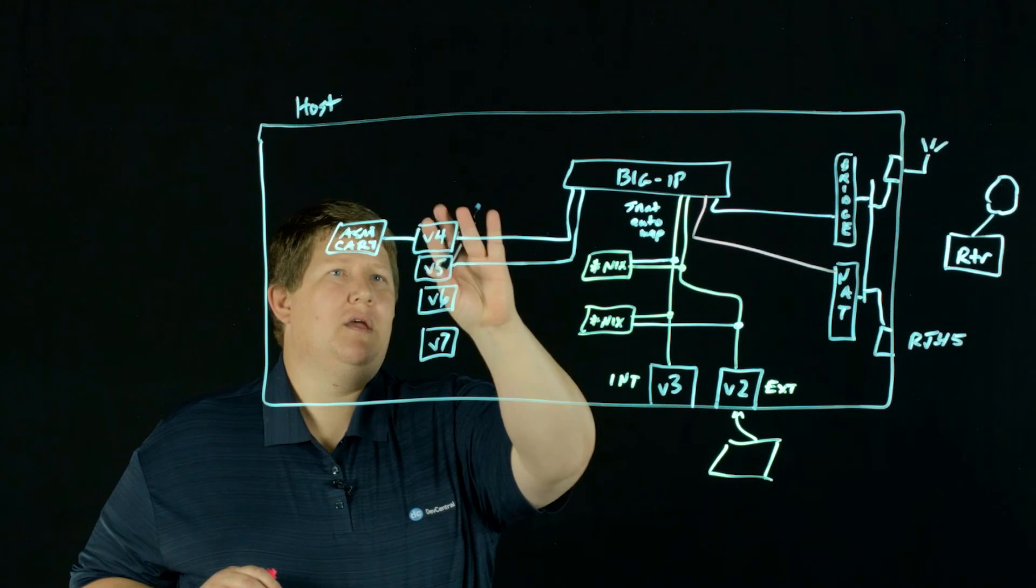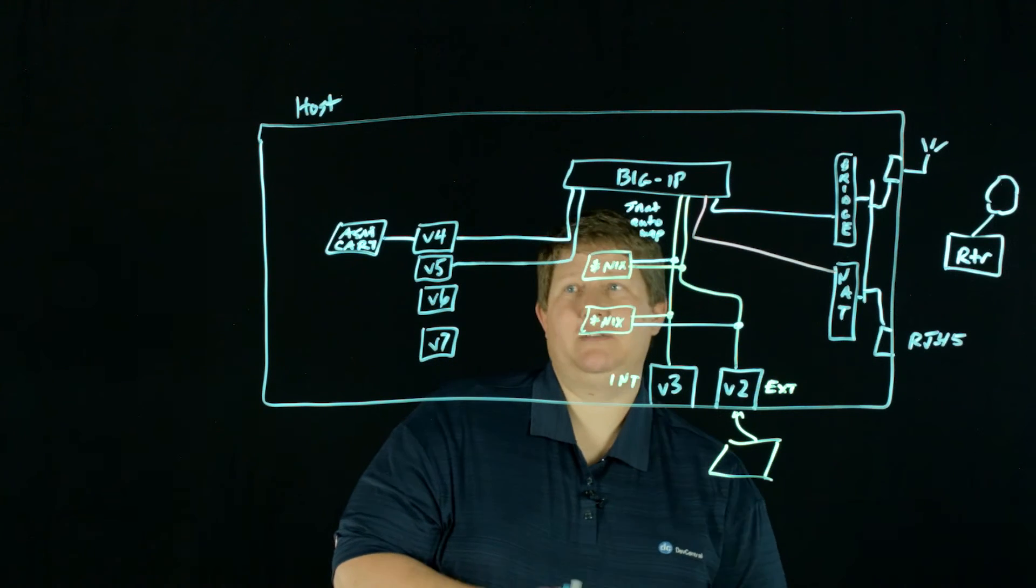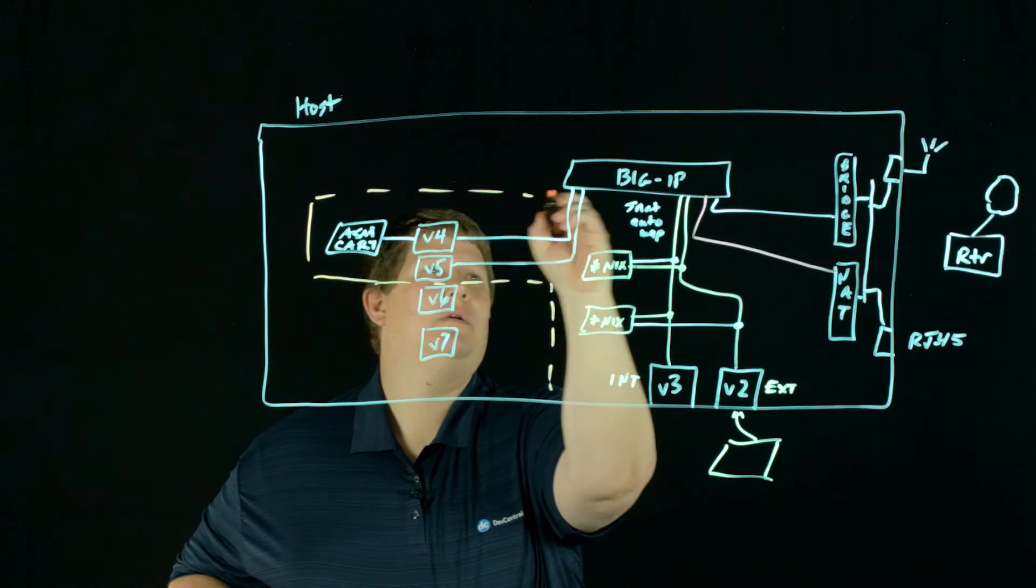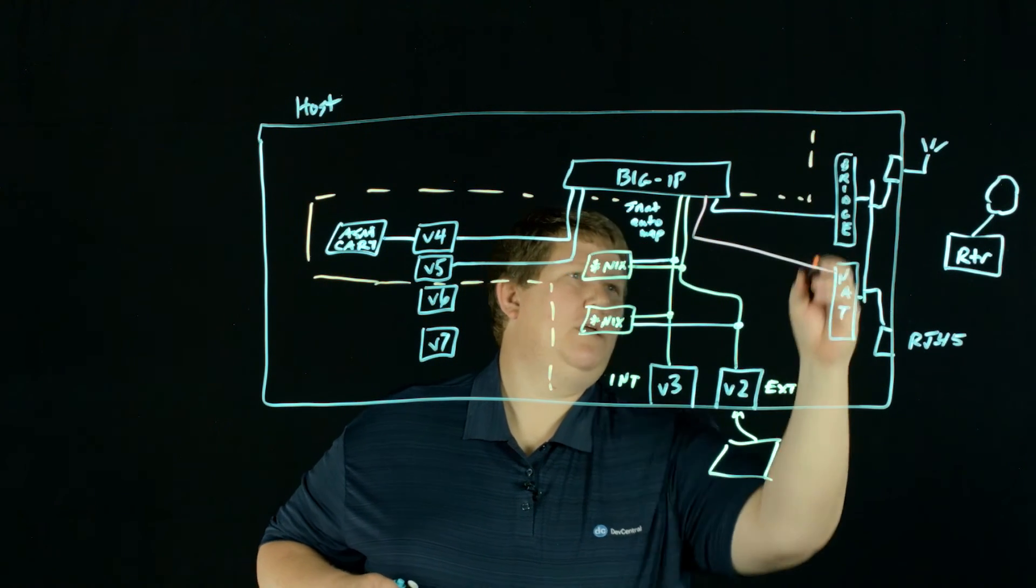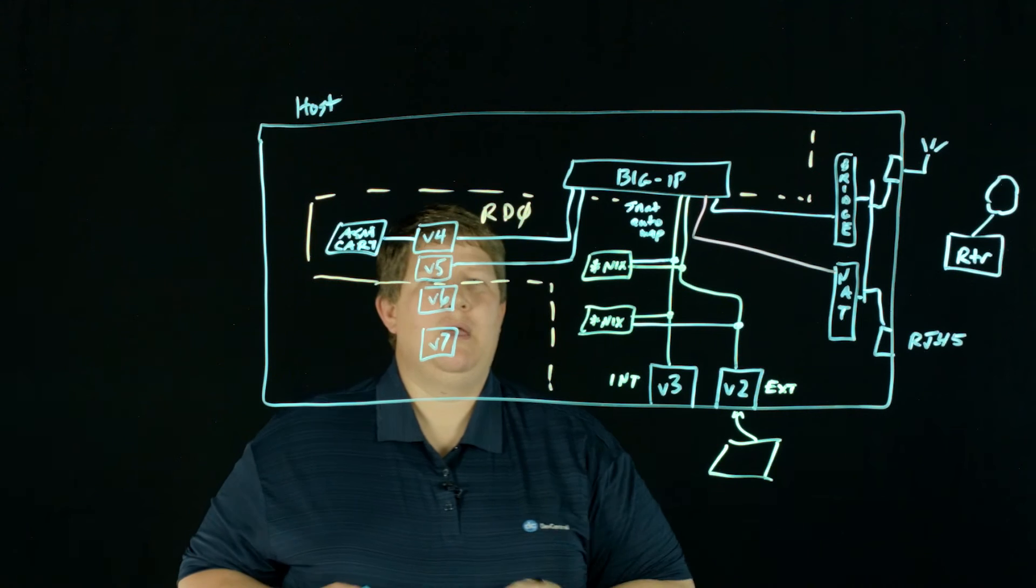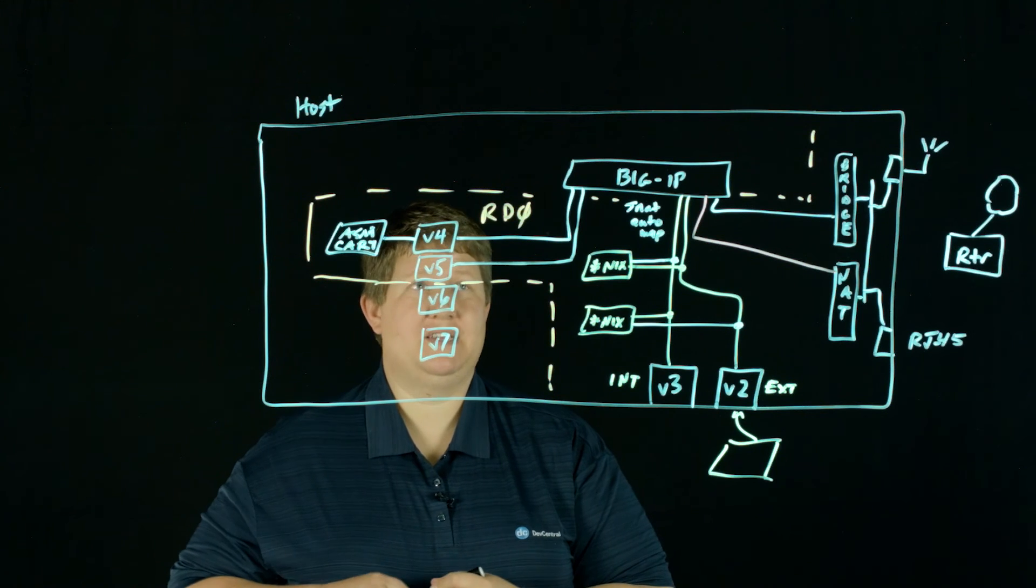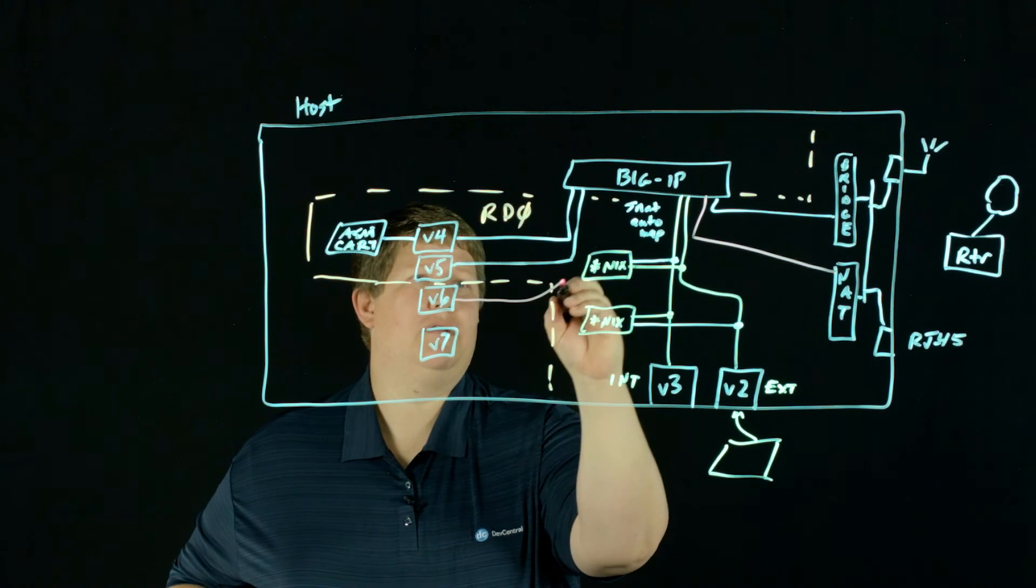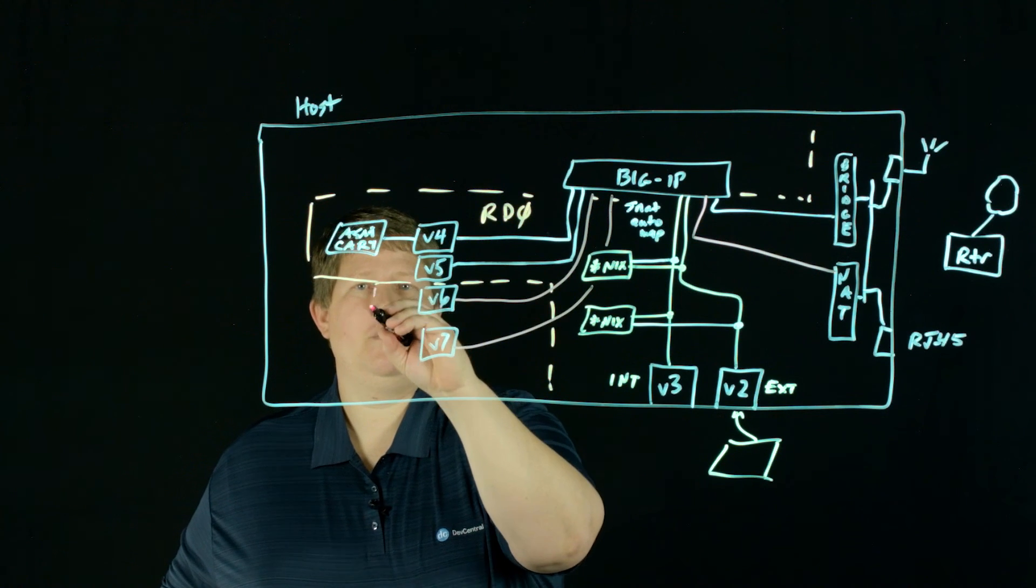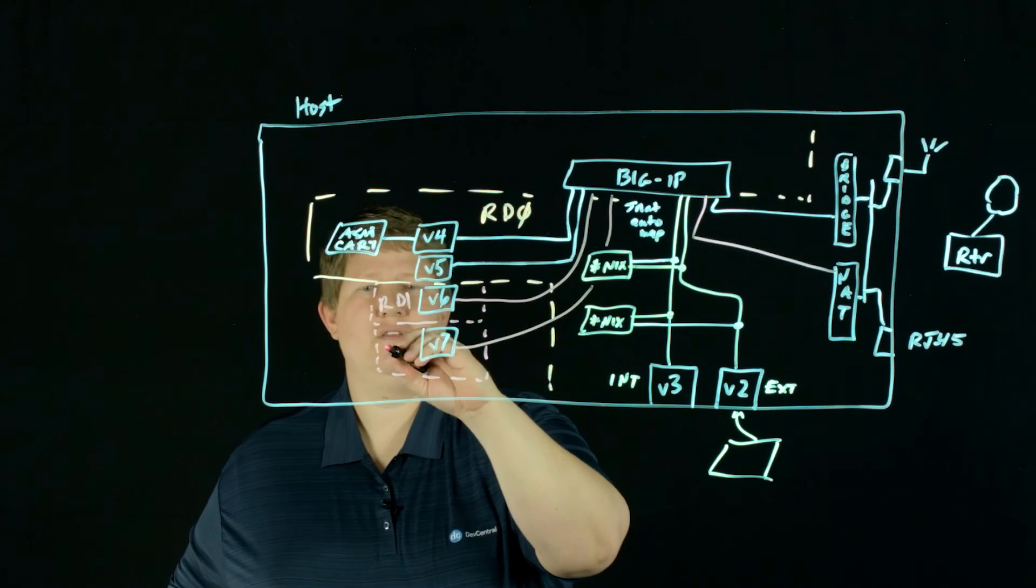And then of course everything through VMNet5. So if I am going to circle all of this, all of this is route domain zero. And if I'm going to do any other testing with route domains, I save these two networks for that.